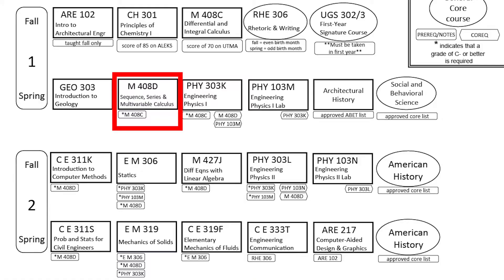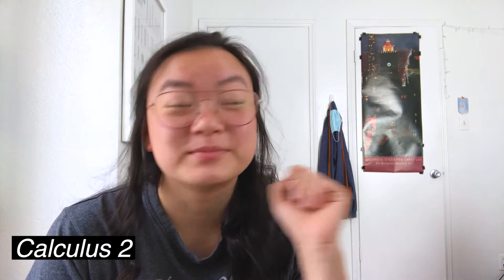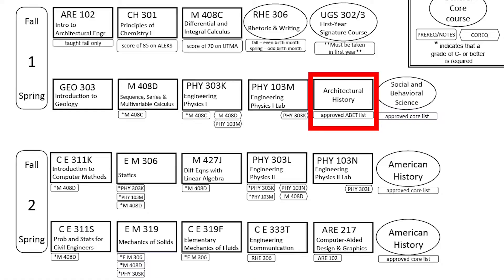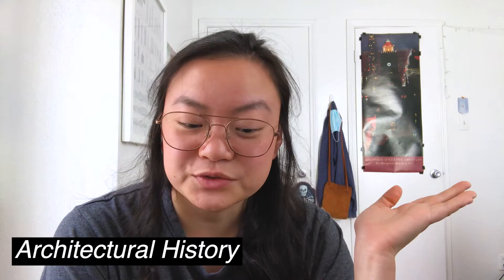Sequence, Series, and Multivariable Calculus is awful — it's just Calculus 2, which you also cover in Calculus BC. Honestly I can't tell you what I learned in that one because it was rough and it's blocked from my memory. Then there's Engineering Physics 1 and the Engineering Physics 1 lab — your standard engineering mechanics, calculus-based physics. If you pass the AP Calculus C mechanics test you can get out of that one.